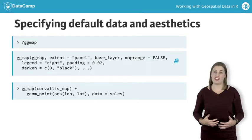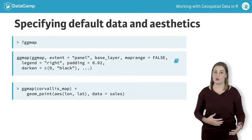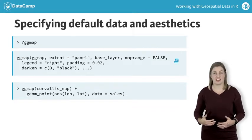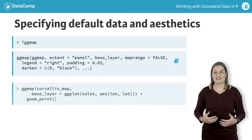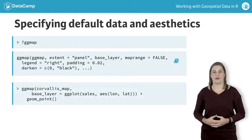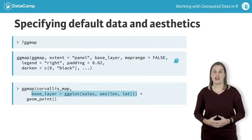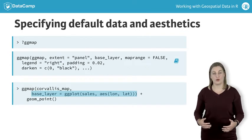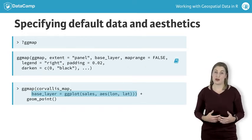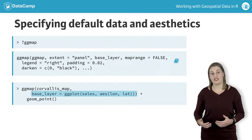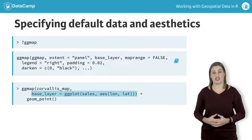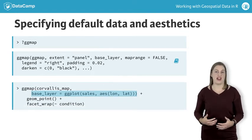The downside of moving the data and aesthetics is that any subsequent layers also need to specify the data and aesthetics, and some things, like faceting, just won't work. The base_layer argument is designed to solve this problem. We can specify our original ggplot call as the base_layer argument, and ggmap will use this to specify the default data and aesthetics for all subsequent layers. This means we can now facet on a variable in our sales data without any problems.